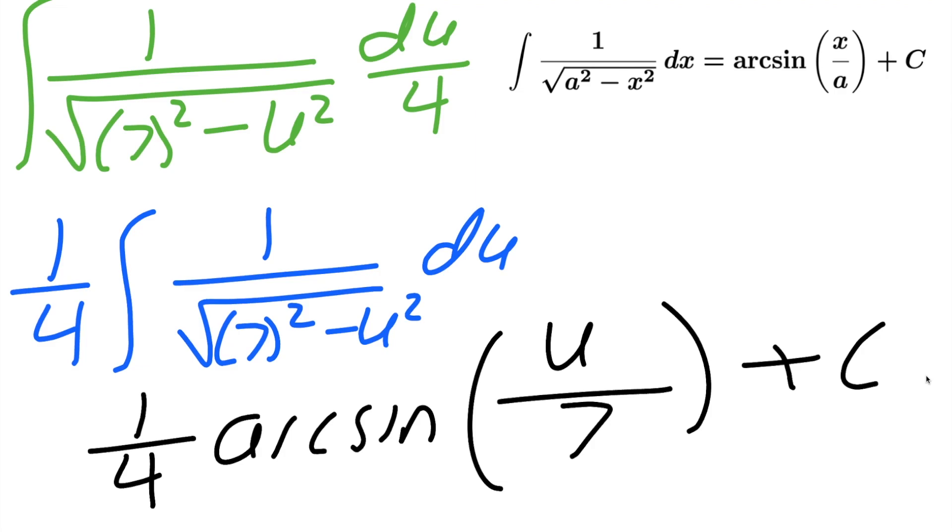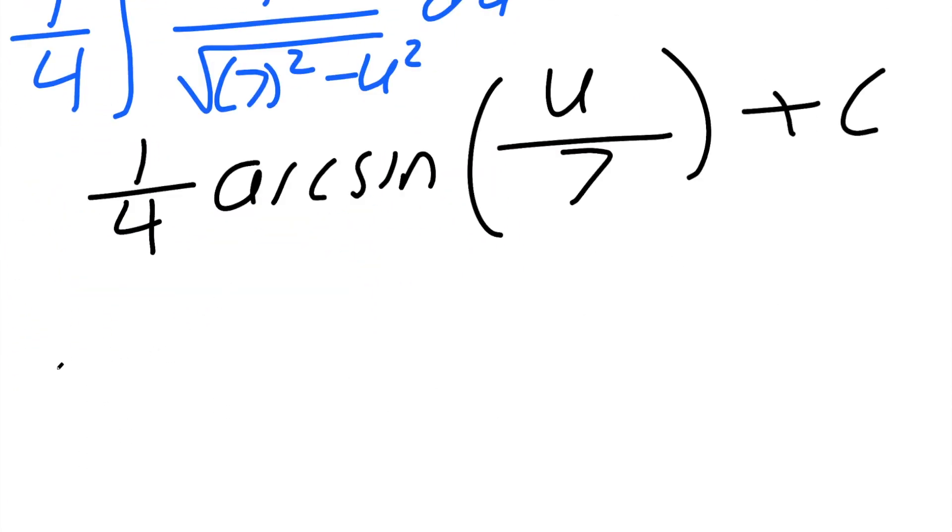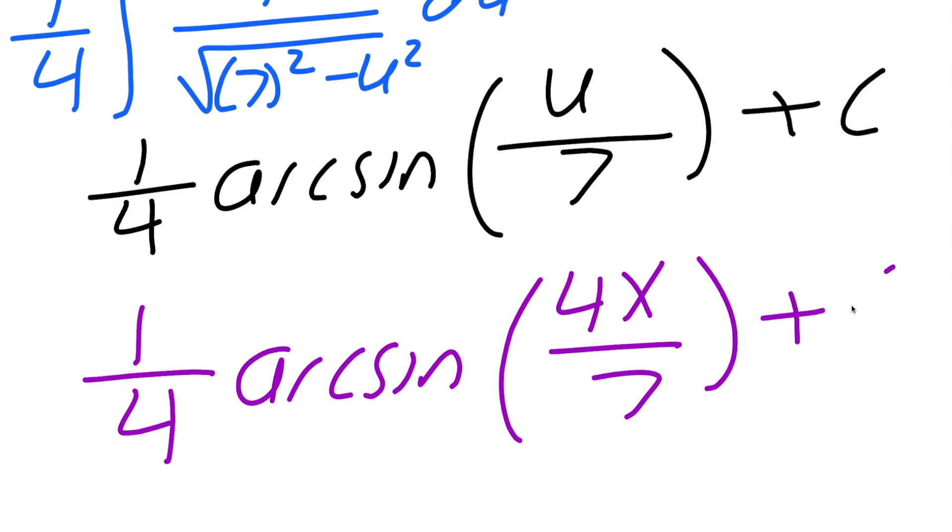Now it's important. We have to replace what u is. And u is 4x. And so our final answer would be 1 divided by 4, arc sine, replace u with 4x divided by 7 plus c. And this right here is our final answer.